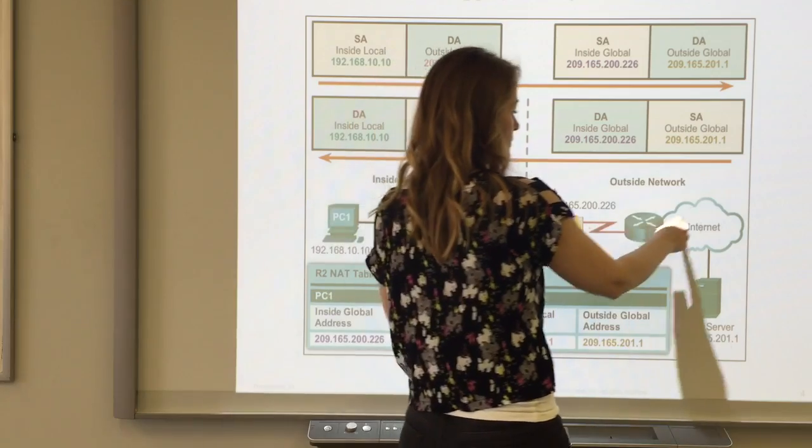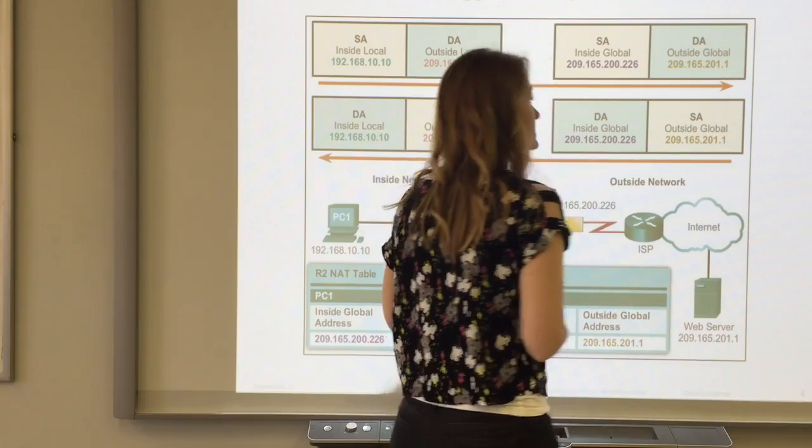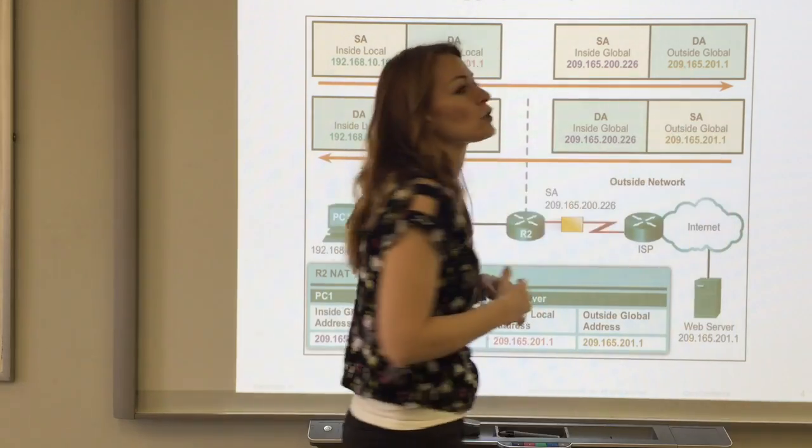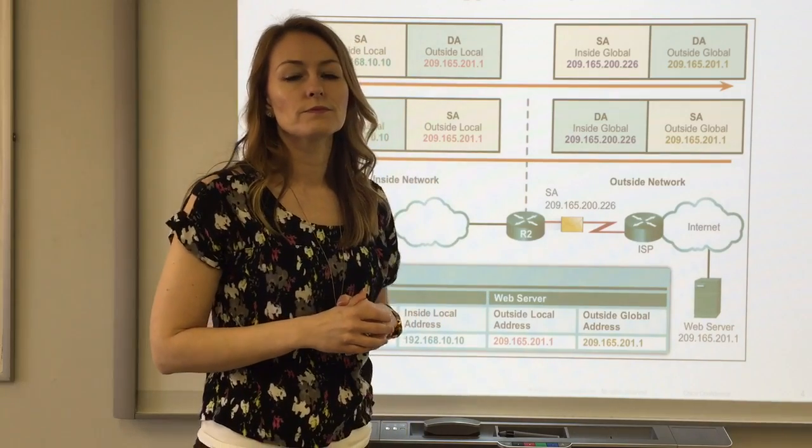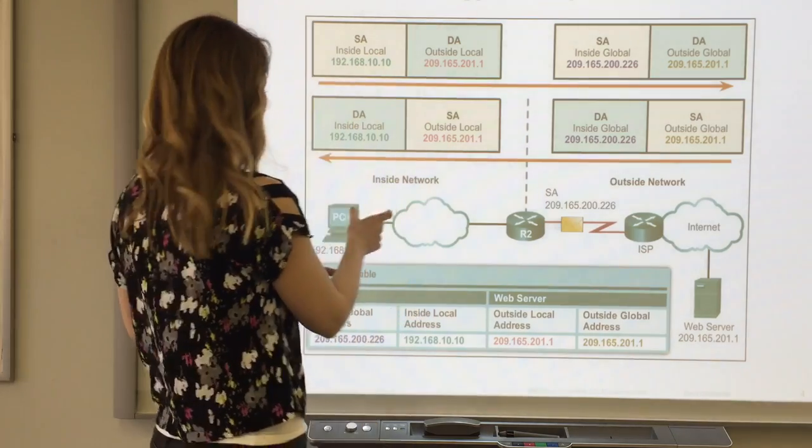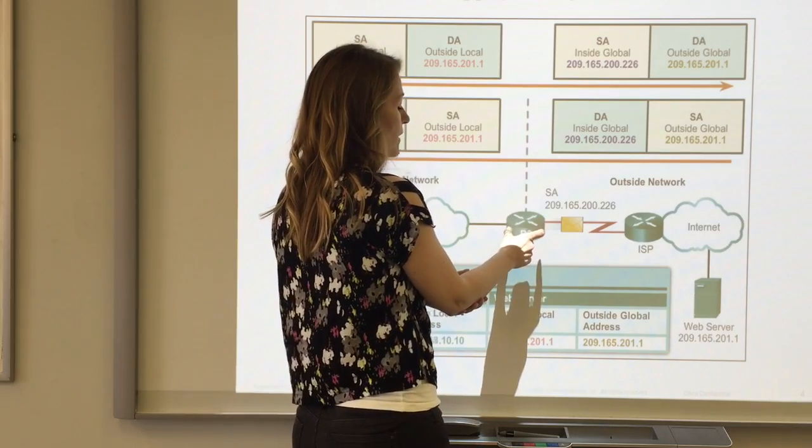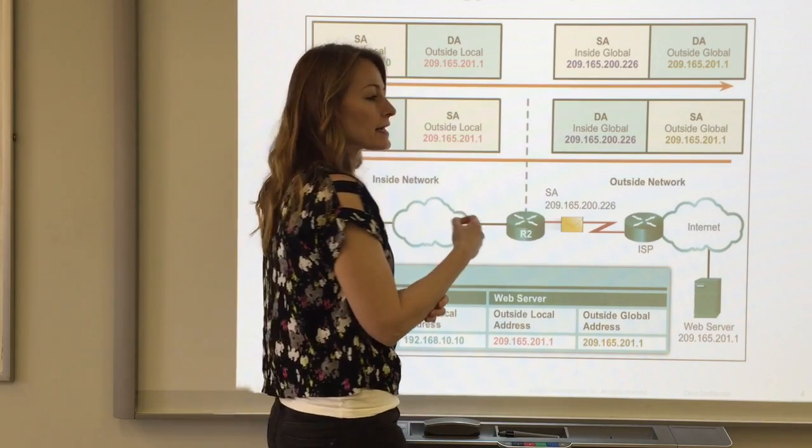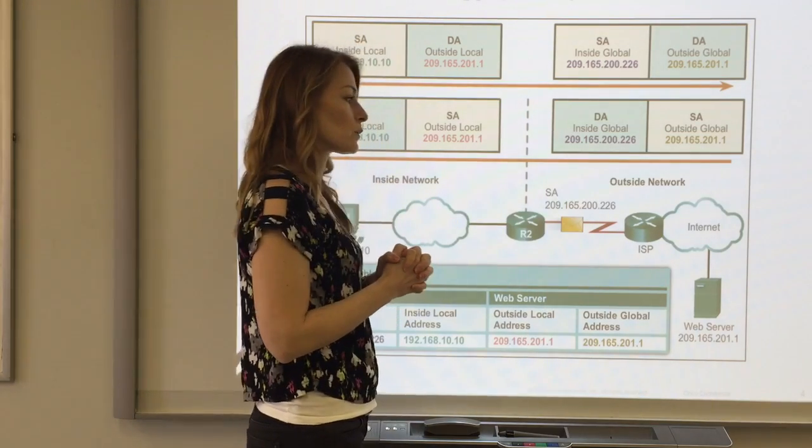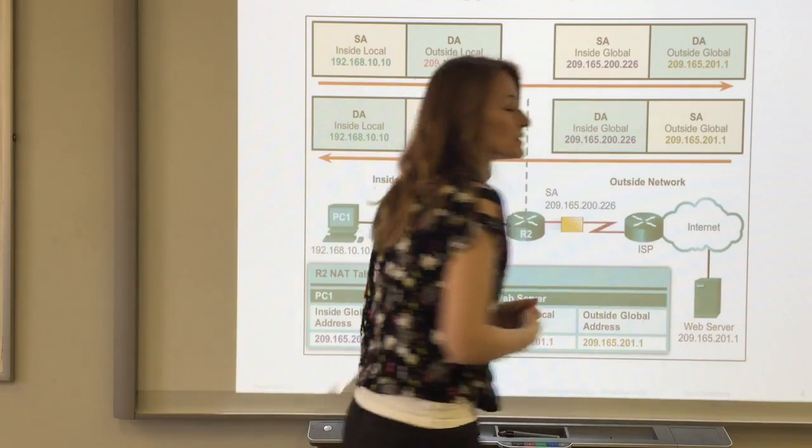The packet traverses to its final destination of 209.165.201.1. That's also the outside global address because that's what everybody views it as. It went from 192.168.10.10 as the source, then at the border router the source got translated to 209.165.200.226, and then it went to its destination.